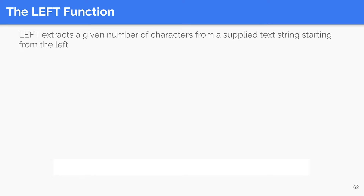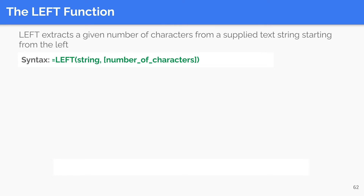We begin with the LEFT function. This allows you to extract a substring from a string starting from the leftmost character. The function takes two arguments: string and number of characters. The first argument refers to the string to be considered and the second argument refers to the number of letters to show. The second argument is optional, and if no number is specified, the function returns only the first letter.